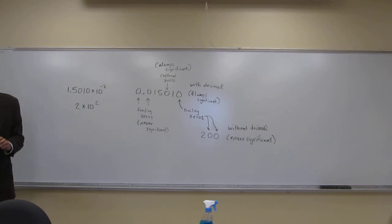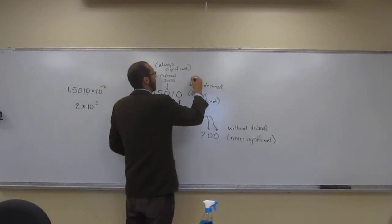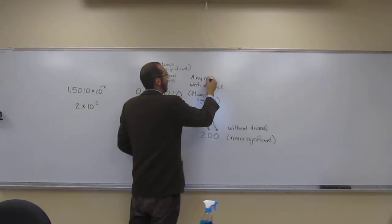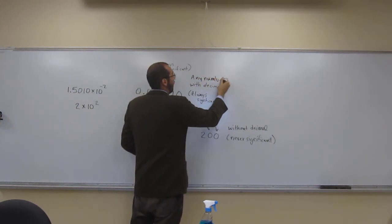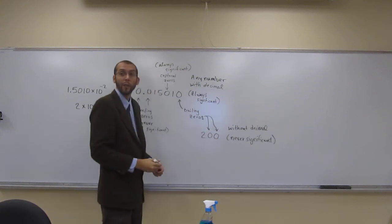Do you have a question? Like in the 200, what would that happen if we had a decimal at the end? So what is any number with a decimal? With a decimal, the trailing zeros are always significant. So if we put a zero there, what would they be?